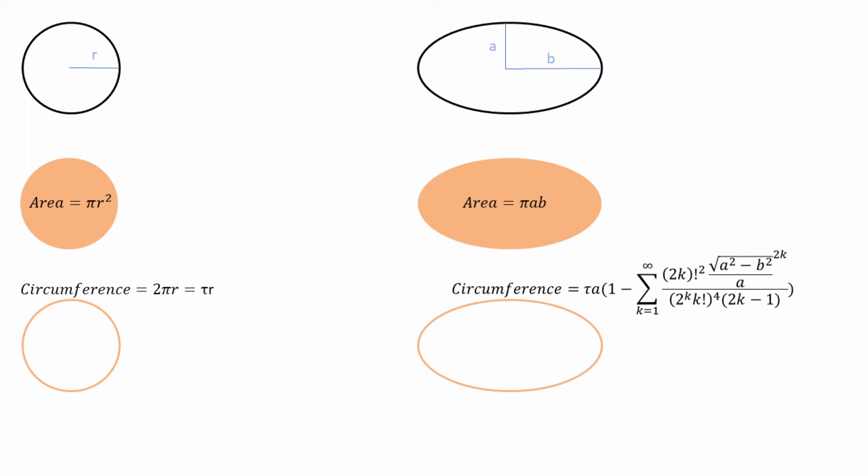Now then, Matt pointed out that pi is also defined as an infinite series. This made me think, maybe in the context of ellipses, it would be better to look at pi and tau as functions rather than constants.